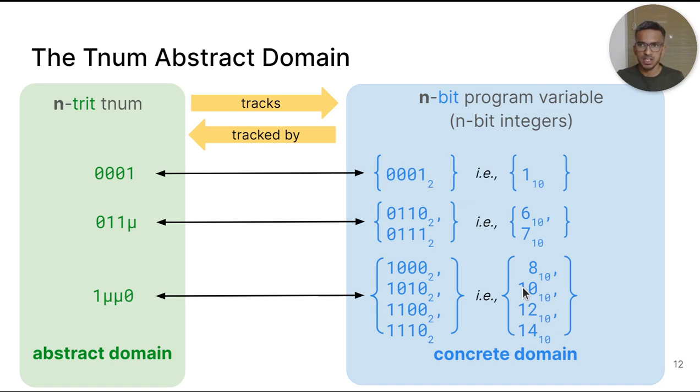Here are some examples of four TRIT TNUMs and the elements from the concrete domain tracked by the TNUMs. As we can see in the third example, a TNUM with more mu-trits abstracts a larger set of concrete integers than a TNUM with fewer mu-trits, like in the second example. Every TNUM abstracts a set of concrete N-bit integers.